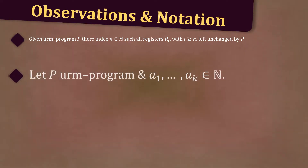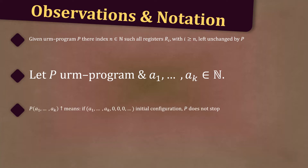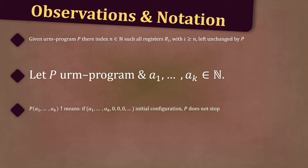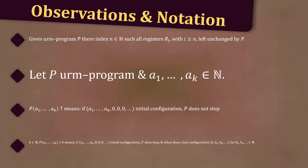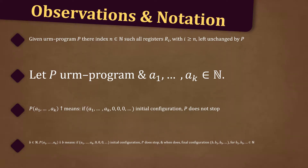Now, let P be a URM program and let A1 to AK be natural numbers. P with an up arrow means that if A1 to AK followed by zeros is the initial configuration, then P does not stop. Given B a natural number, P down arrow B means if A1 to AK followed by zeros is the initial configuration, then P does stop, and when it does the final configuration is B followed by B2, B3 for some B2, B3 in the natural numbers.